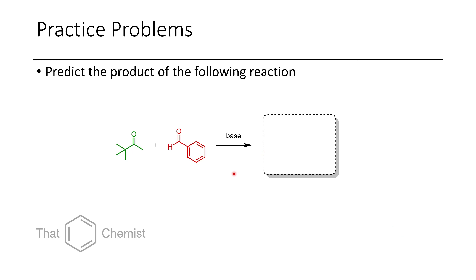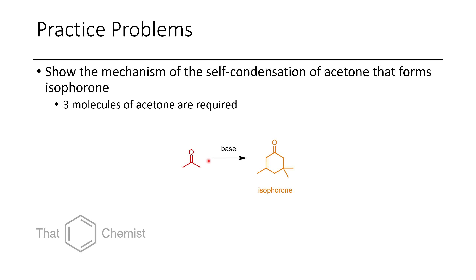I'd like to assign a couple of practice problems for this lecture. First, take this tert-butyl methyl ketone and treat it with benzaldehyde in the presence of a base — predict the product, and consider whether we get the E or the Z isomer. Additionally, if we take acetone and treat it with a base, it can undergo a few different condensation reactions. First it makes something called mesityl oxide, and then forms isophorone under subsequent reactions. I haven't drawn the structure of mesityl oxide because it would be too much of a giveaway. Try drawing the self-condensation reaction of acetone, look at the product, and see if you can figure out how isophorone is formed. You might need to use some of the conjugate addition chemistry from the last episode.